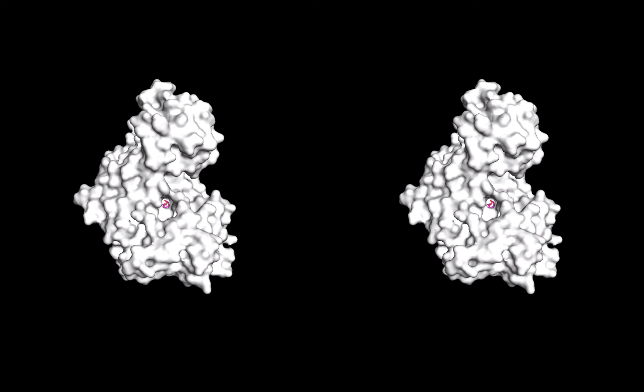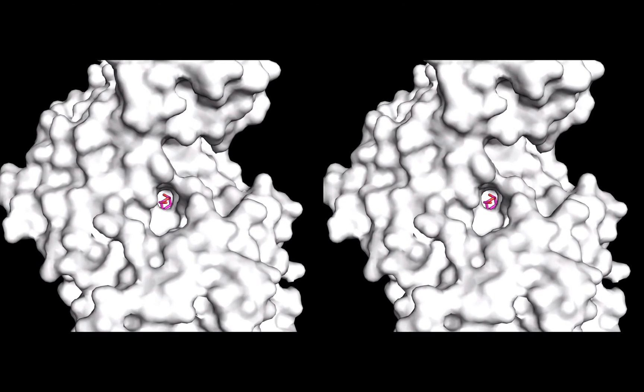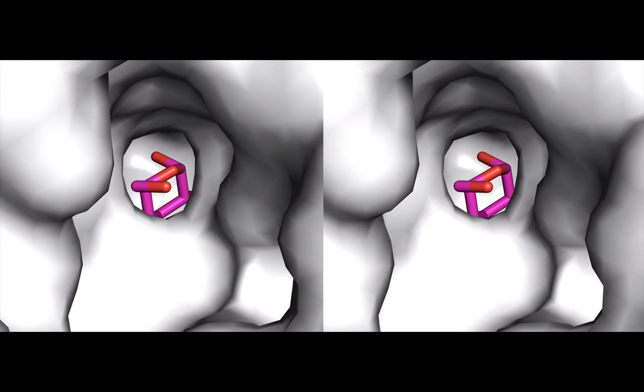This crystal structure actually has a molecule of glucose bound in the active site. Let's show that as magenta sticks and zoom in. Pretty neat, glucose is sitting there right inside that cleft.